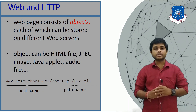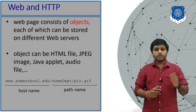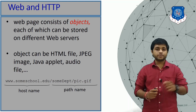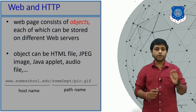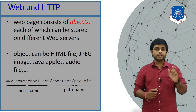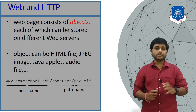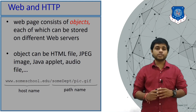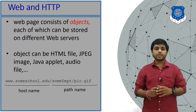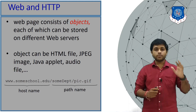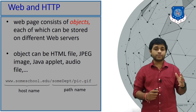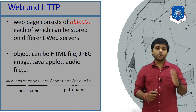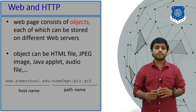The World Wide Web uses the HTTP protocol. At the bottom you can see a website called www.sumschool.com — that part is the address of the server. After the slash, you can see a path name. In one website there are different sections you can access, and those are represented as a path name.